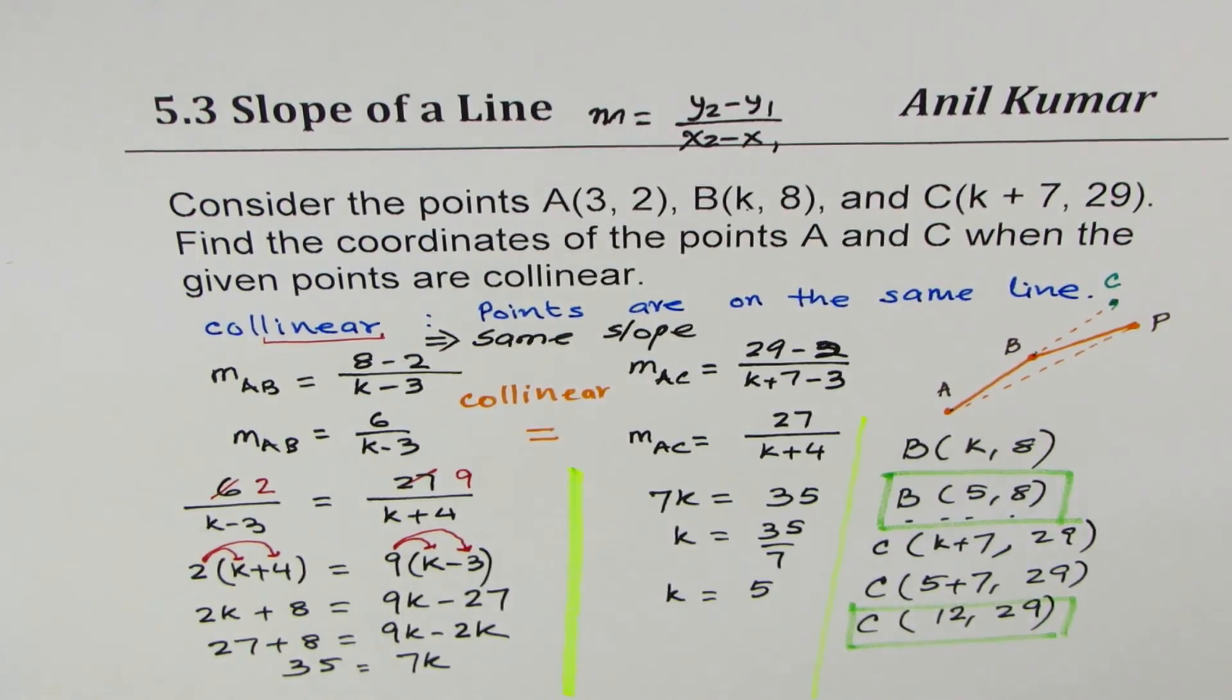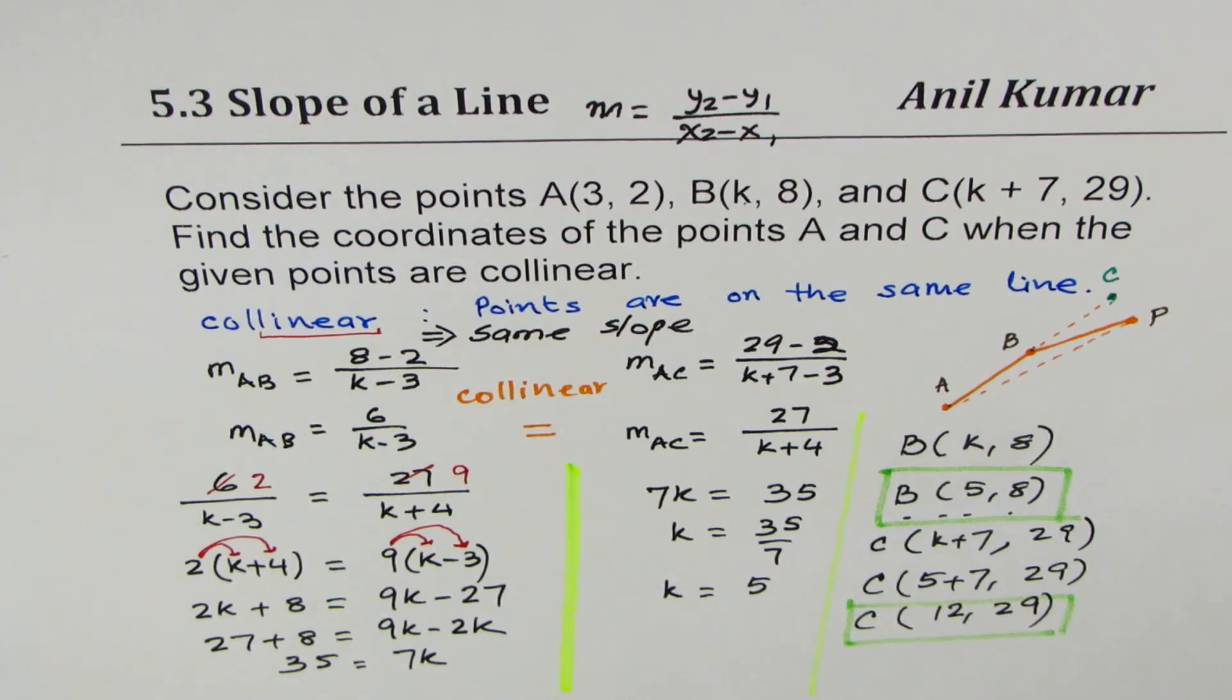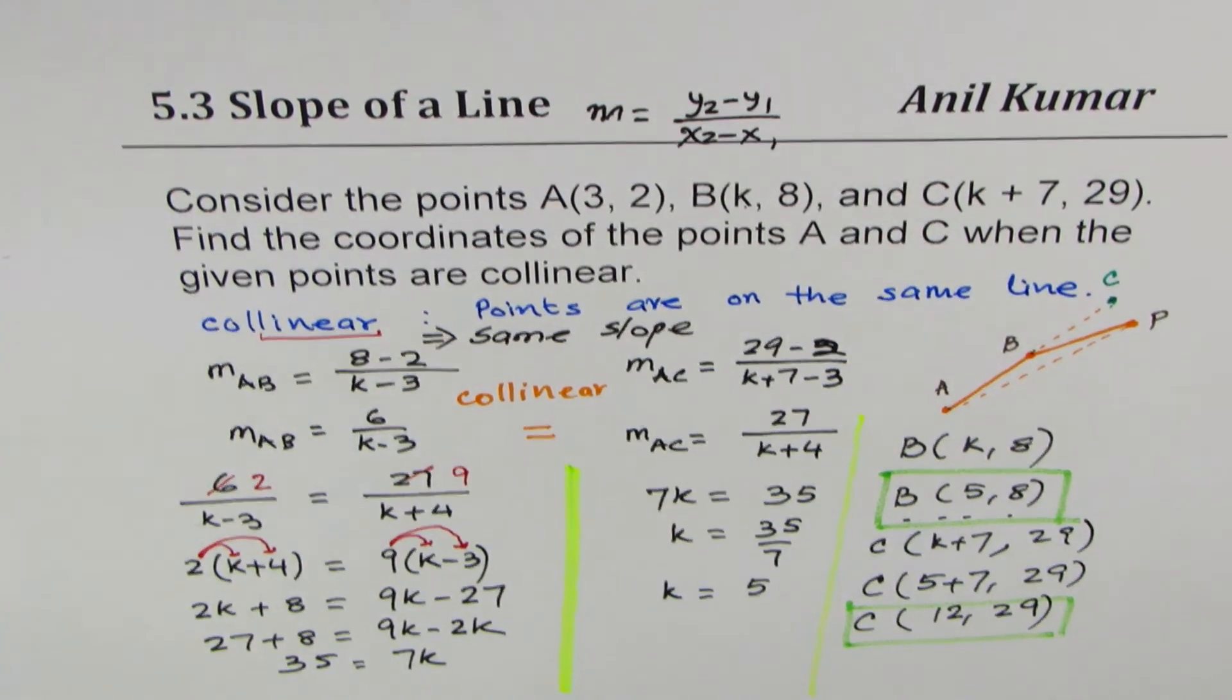That is how you need to solve. Remember, collinear means points lying along the same line. Their slopes should be same. That helps us to solve such questions. I hope that helps. Feel free to post your suggestions and comments. Thanks for watching.